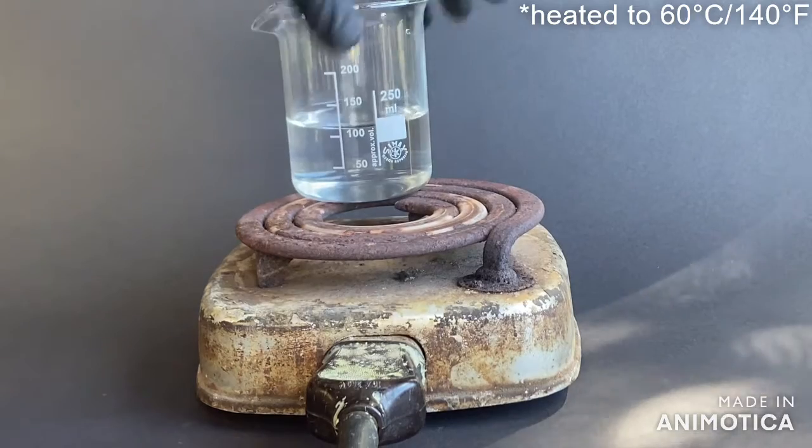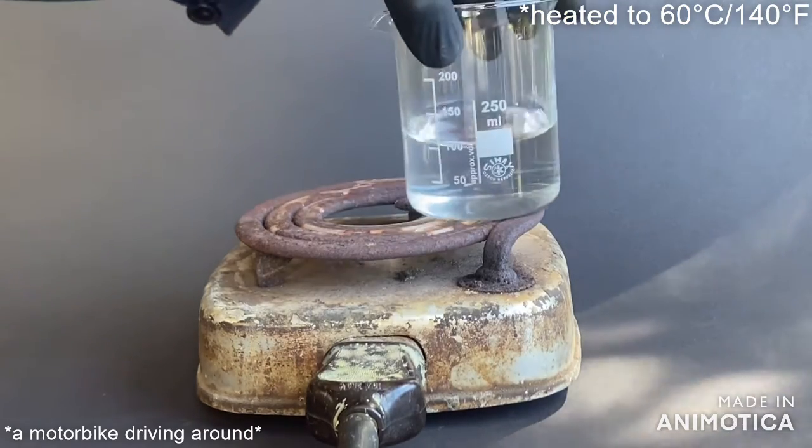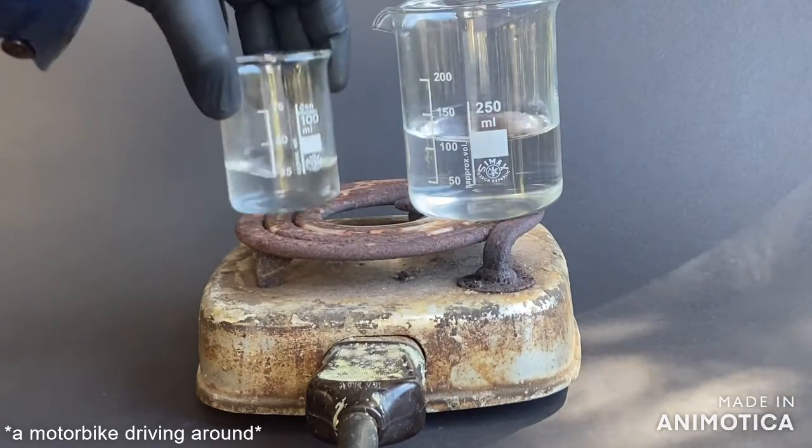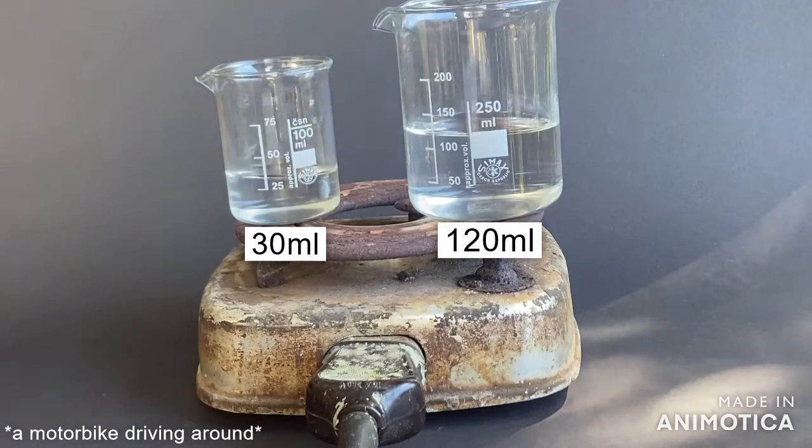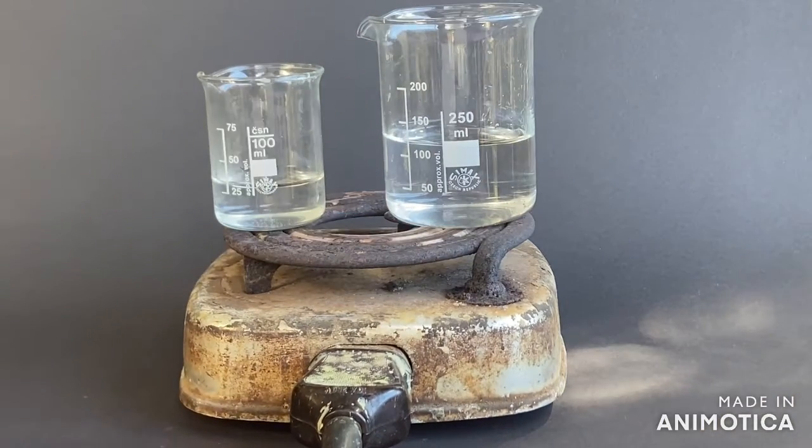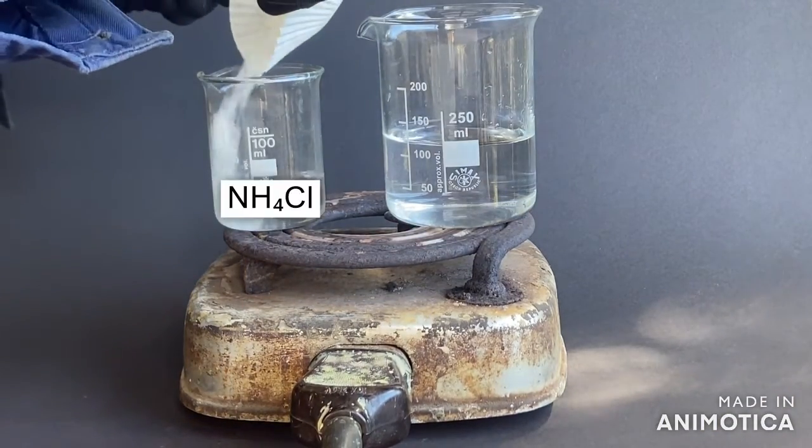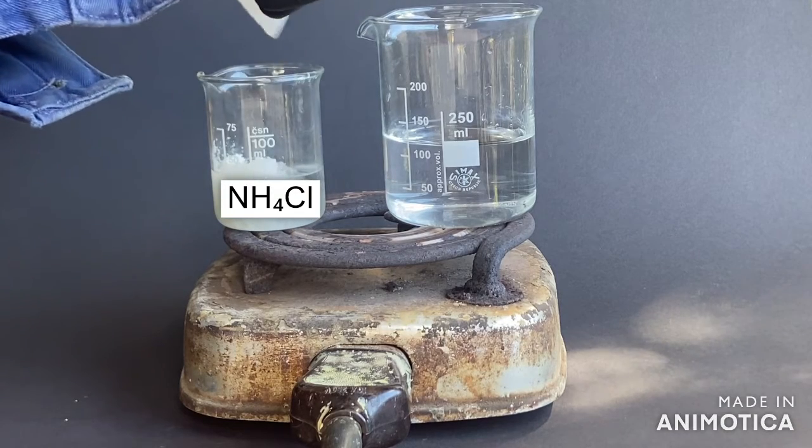First I heated two beakers with 30 milliliters of water in the first and 120 milliliters of water in the second one on my hot plate. Into the smaller one I added 15 grams of ammonium chloride.